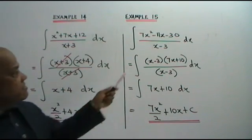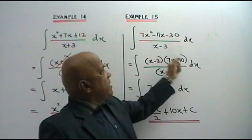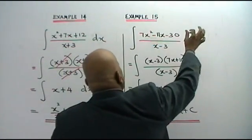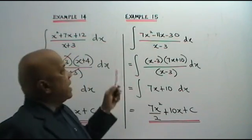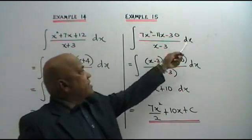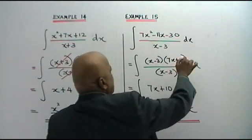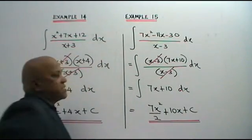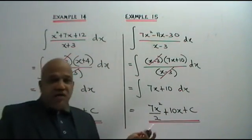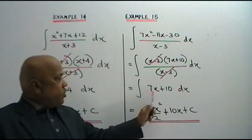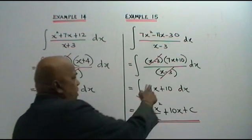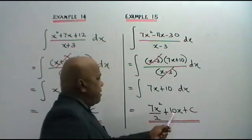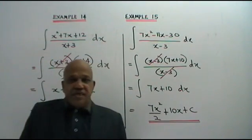Now here we have example 15. You are asked to integrate this with respect to x. This is also a quadratic expression in the numerator which can be factorized. When you factorize, you get x minus 3 times 7x plus 10 over x minus 3. X minus 3 and x minus 3 cancel. So what have you got? 7x plus 10 dx. We integrate this: 7x — power 1, 1 plus 1 is 2, bring the 2 down. 10 is just a number, add the x. Plus C. Always for indefinite integrals, plus C.